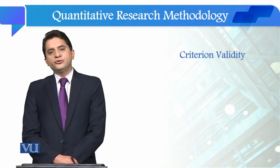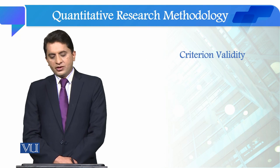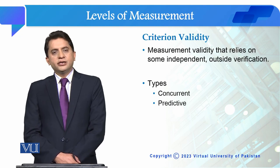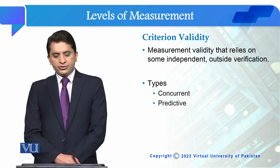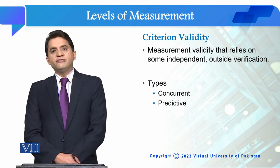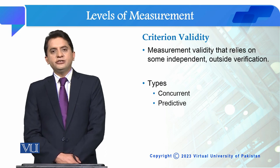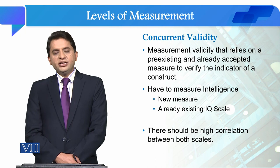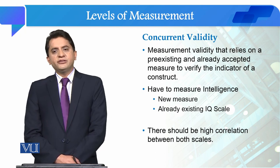Students, we will talk about Criterion Validity and its types. Criterion Validity is a measurement validity that relies on some independent outside verification, and its two types are concurrent and predictive validity.